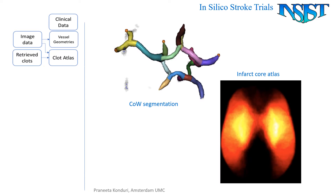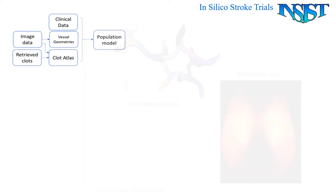From these data, we derive vessel geometries of individual patients, as well as atlases of clot composition and infarct core location. These data form the base for our stroke population model.